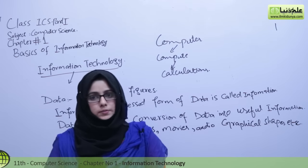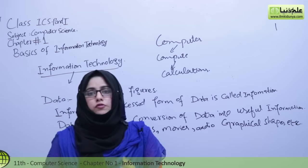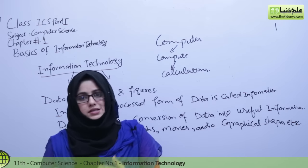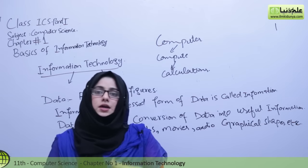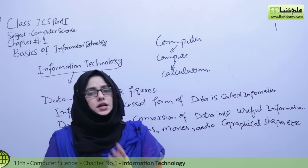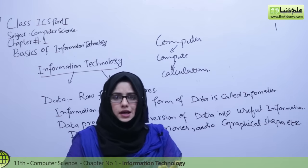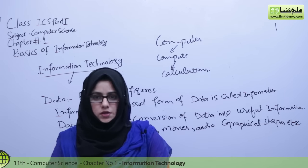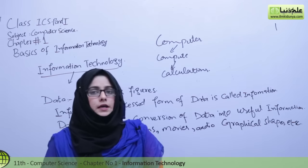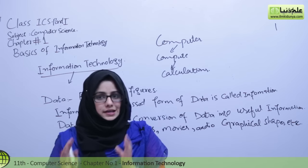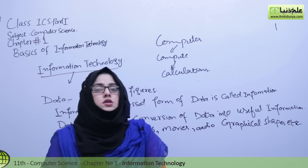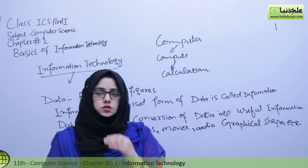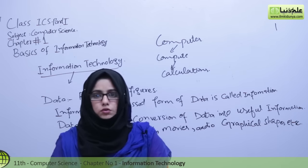In the first generation, vacuum tubes were not reliable — they produced a lot of heat and were very large in size, so they were very difficult to deploy. Therefore, the technology was replaced by using transistors. Transistors are much more reliable and very small in size compared to vacuum tubes, and they are less heat-producing devices. This era is called the second generation.